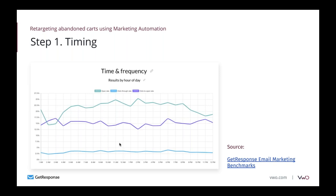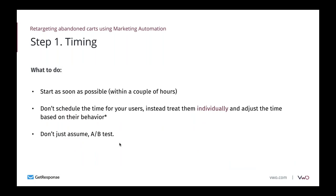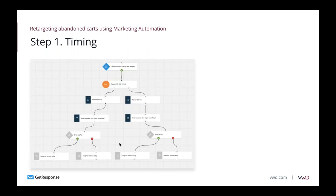With retargeting, the most important thing is to act quickly — start as soon as possible, especially when you're trying to convince users to buy a product they don't have to think over for a long time. Don't schedule for your users; instead look at their behavior and use marketing automation. Same with remarketing ads — do it as fast as possible, and A/B test if you're unsure about the strategy.